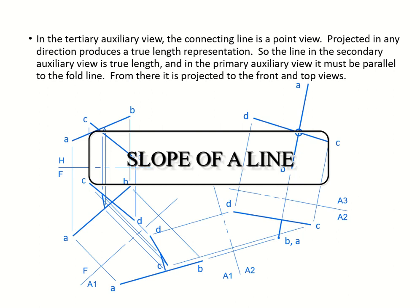Alright, so we finished with the intersection, then we finished the visibility and how to solve it, then we solved the shortest distance. Now we'll get into the slope of a line.